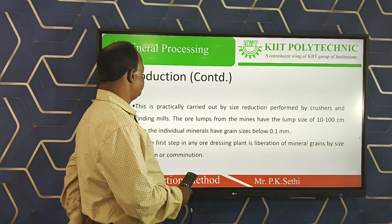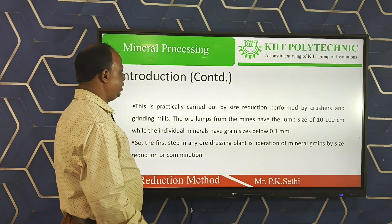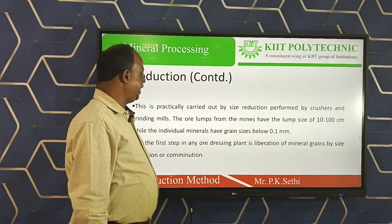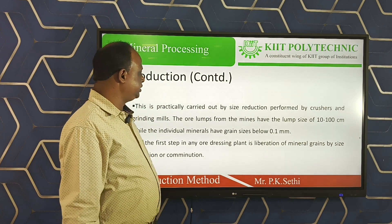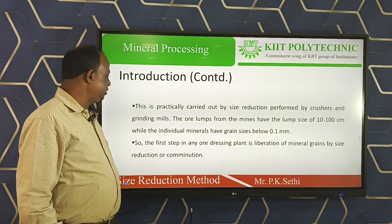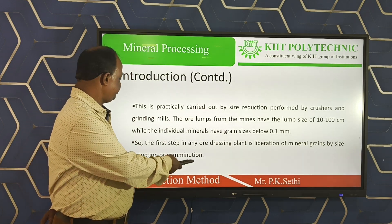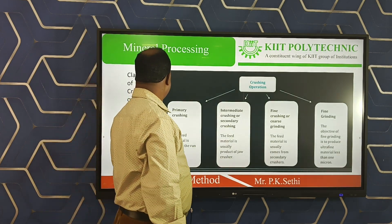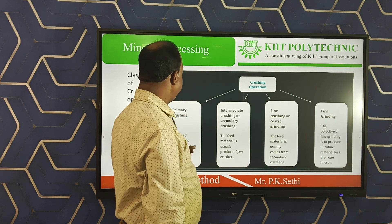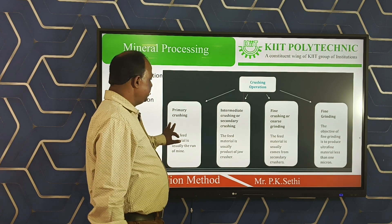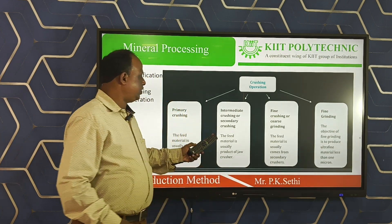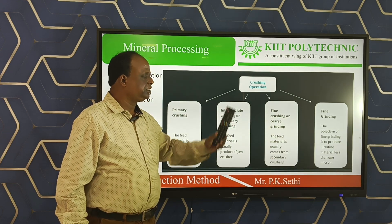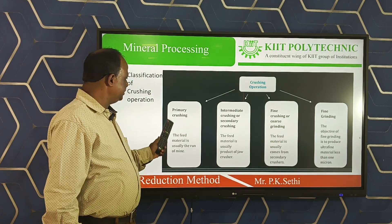This is a practice carried out by size reduction performed by the crushers and grinding mills. The ore lumps from the mines have a lump size of 10 to 100 cm, while the individual minerals have grain sizes between 0.1 mm. The size reduction process, or comminution process, is divided into four types: first is primary crushing, second is intermediate crushing or secondary crushing, third is fine crushing or coarse grinding, and fourth is fine grinding.